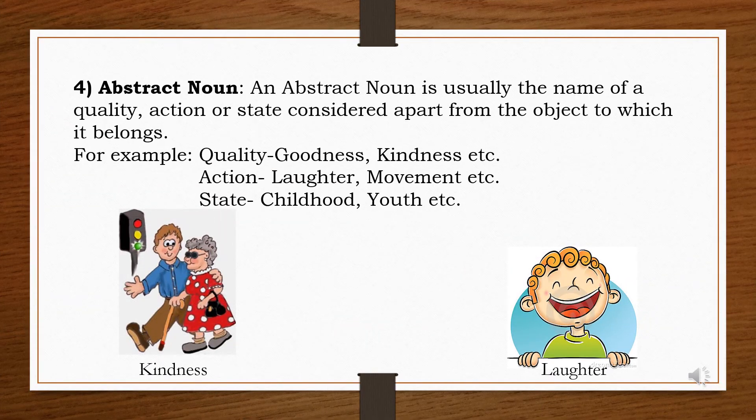The fourth kind of noun is the abstract noun. An abstract noun is usually the name of a quality, action or state considered apart from the object to which it belongs.